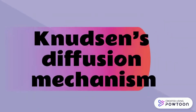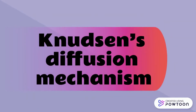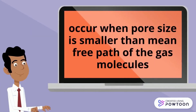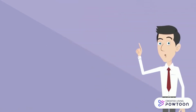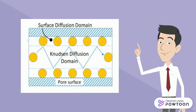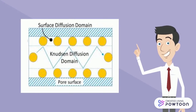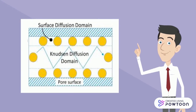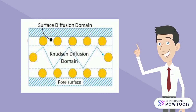This can be explained by the Knudsen diffusion mechanism. Knudsen diffusion occurs when the pore size is smaller than the mean free path of the gas molecule. This means the interaction of the gas molecule with the pore walls is more frequent than colliding with each other, which allows the lighter molecule to diffuse first.